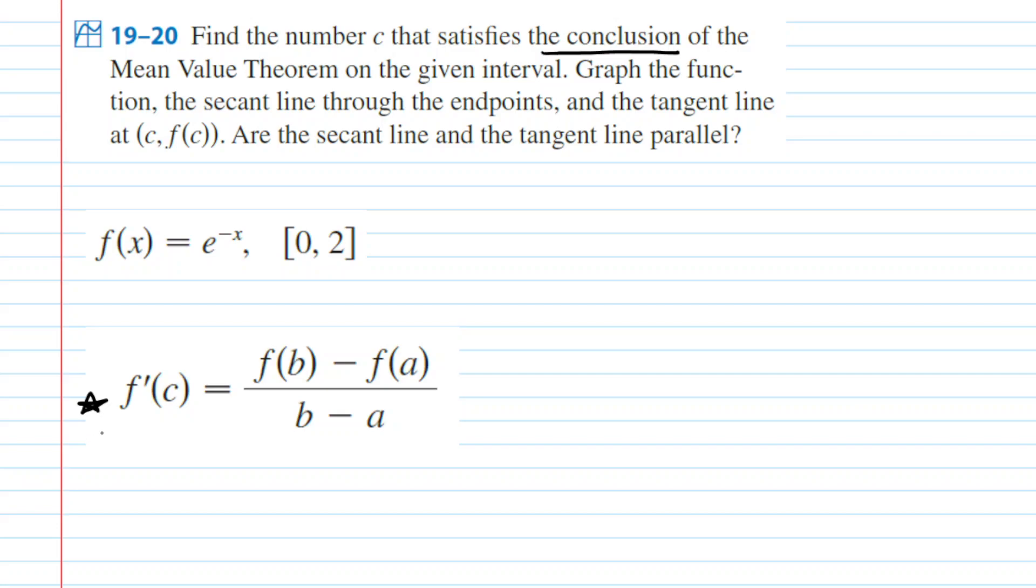Now if we look at that conclusion, we actually need five pieces of information, and we're going to begin with the value of a. Now a is simply the leftmost point on your interval, so in this case the value of a would equal 0.